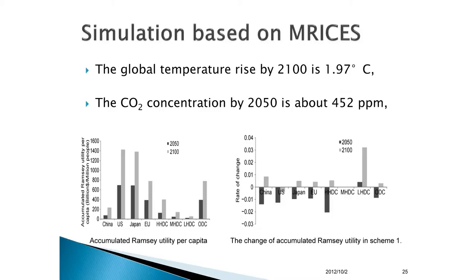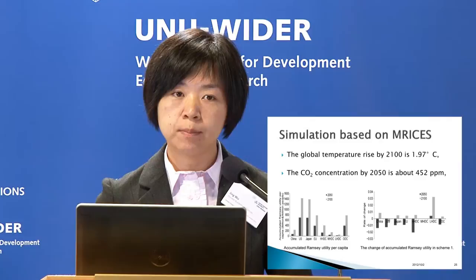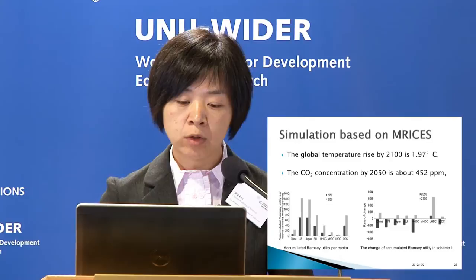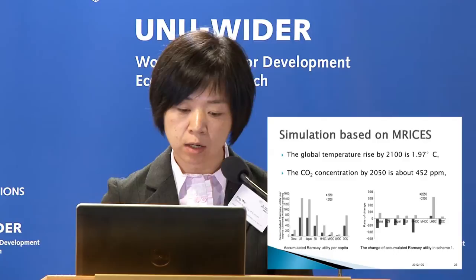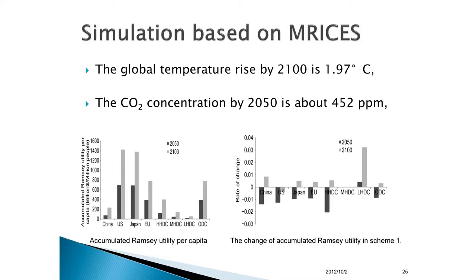Based on the MRACE model, the global temperature rise by the end of this century under Scheme One is 1.97 degrees, and the CO₂ concentration by 2050 is about 452 ppm. We also get the utility of each country. As shown in the figure, in Scheme One the utility in developed countries in 2050 and 2100 is higher than that of developing countries, but the change in utility in developing countries is almost positive, while the change in developed countries may be negative for some.